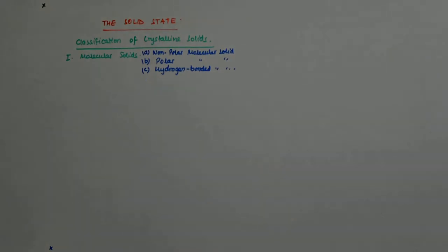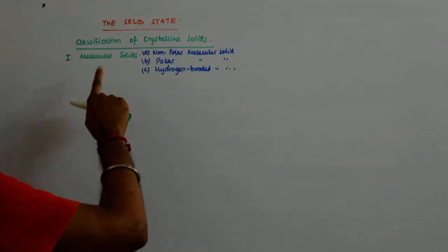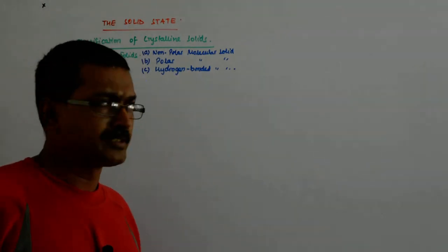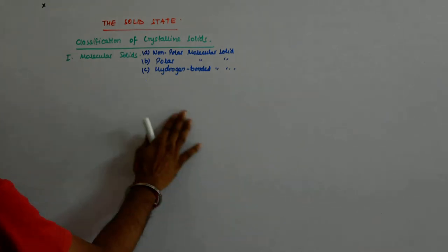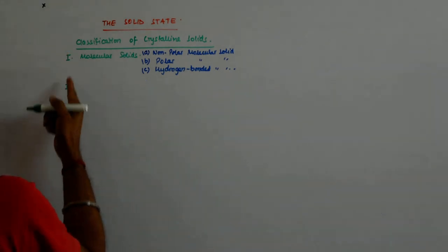So we have done the molecular solids: non-polar molecular solids, polar molecular solids, and hydrogen bond molecular solids. Now we come to the second in line. We had said there will be four.